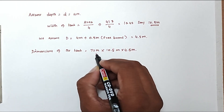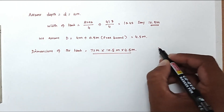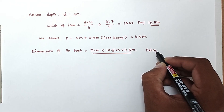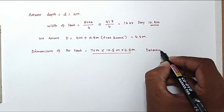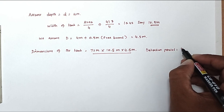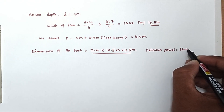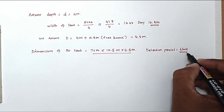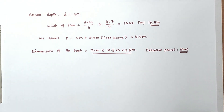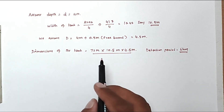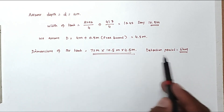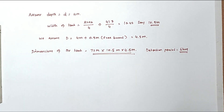So this is the answer: detention period equals 6 hours, as given. This is the method we use to design a sedimentation tank. We will see the next problem in the next video. Thank you.